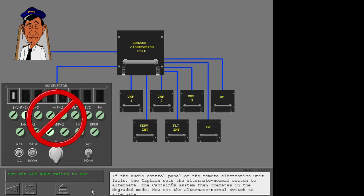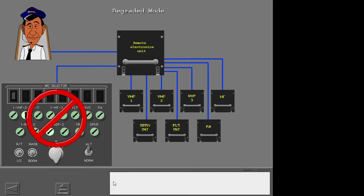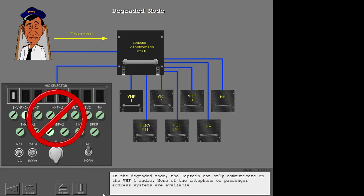If the audio control panel or the remote electronics unit fails, the captain sets the alternate/normal switch to alternate. The captain's system then operates in the degraded mode. Now set the alternate/normal switch to alternate. In the degraded mode, the captain can only communicate on VHF-1 radio.